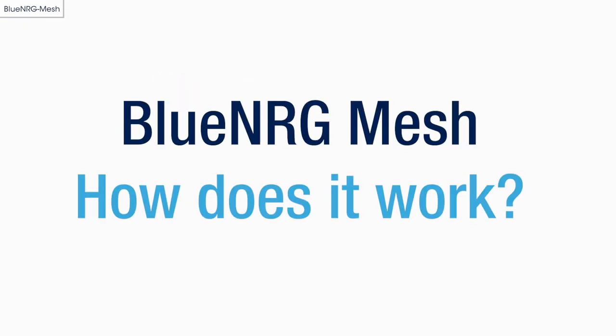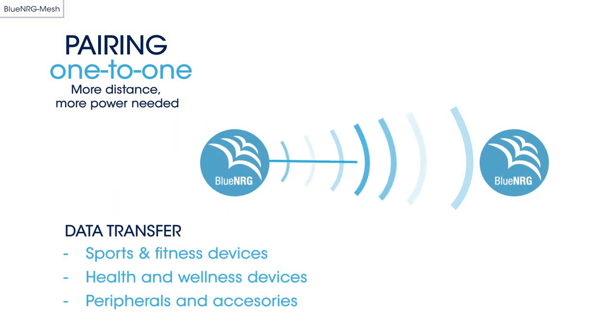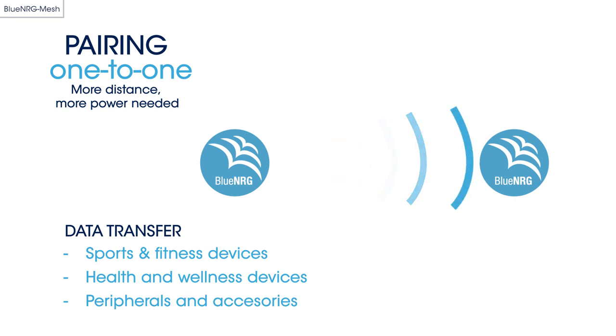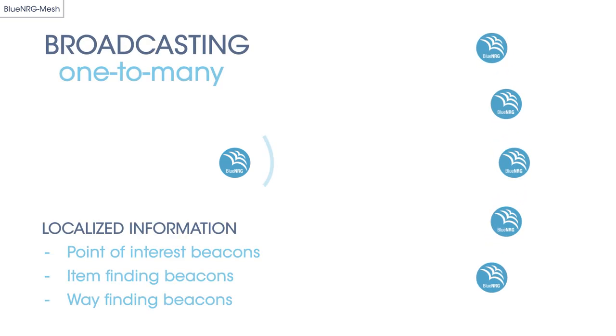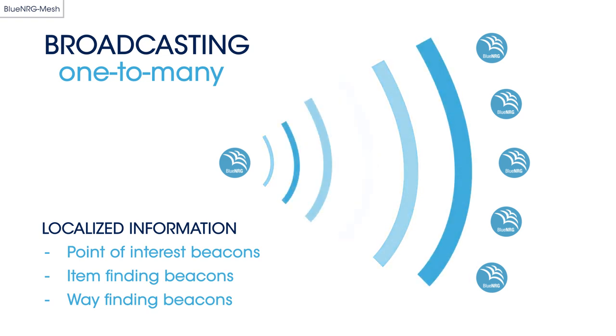Let's start by describing how a wireless mesh network works. In a point-to-point or star network, the signal range depends on the RF output power. To guarantee a sufficient lifetime or to increase energy efficiency of battery-powered devices, we have to reduce power consumption and therefore the RF output power.